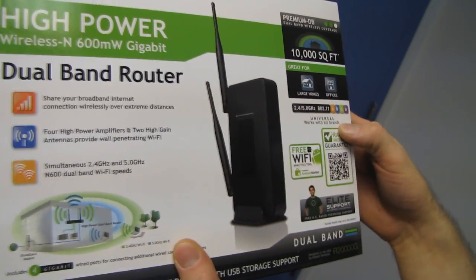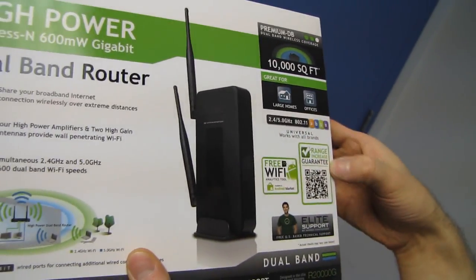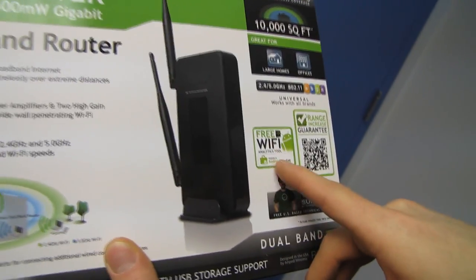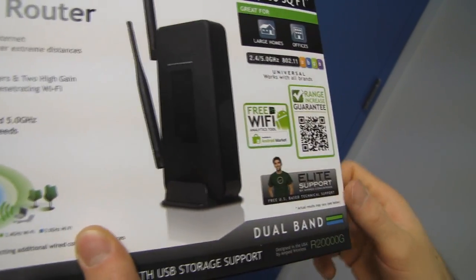2.4 slash 5 gigahertz dual band. Range increase guarantee. You can use a QR code to see their range increase guarantee. Free Wi-Fi analytics tool available in the Android market. That's kind of cool as well. Although there are free Wi-Fi analytics tools.